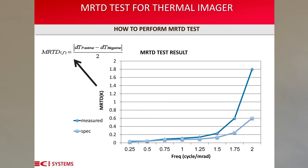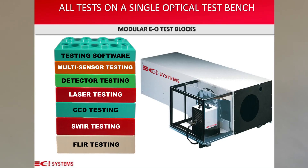CI automated test software changes targets, sets the temperature, and plots the MRTD graph for maximum productivity. Thanks for viewing my short video about MRTD testing. Contact us to learn how all of these tests can be combined into a single optical test bench. For more information and videos, go to www.cisystems.com. Thanks.